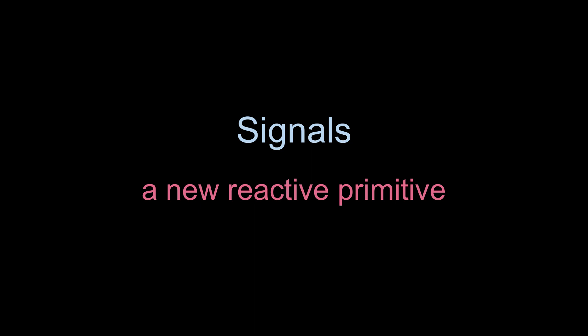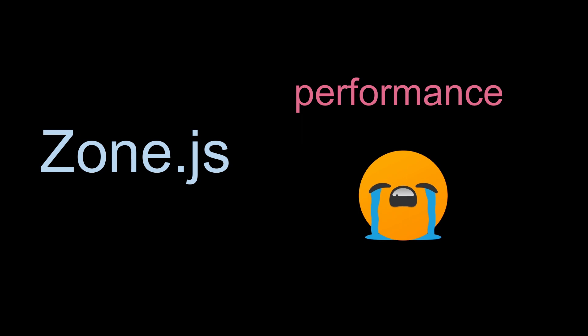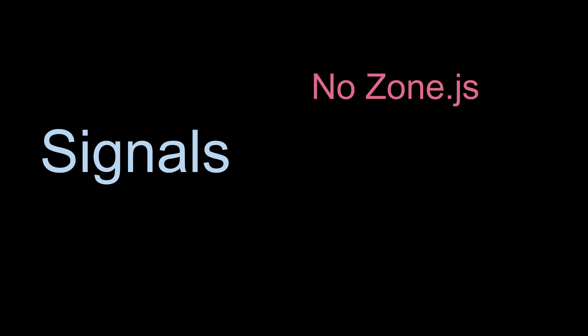So what are signals? Signals are a new reactive primitive introduced by the Angular team in version 16. It has been released as a developer preview. A signal is basically a variable containing a value, but alongside the value it also has a way to notify all of its consumers. Signals have been introduced because Angular till now has been using zone.js, a third-party library to implement change detection. Zone.js has some performance problems in that change detection always occurs from top to bottom and the whole component tree has to be traversed again and again, even if there is a small data change.